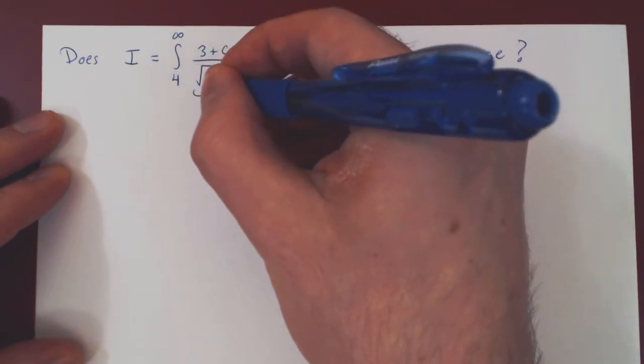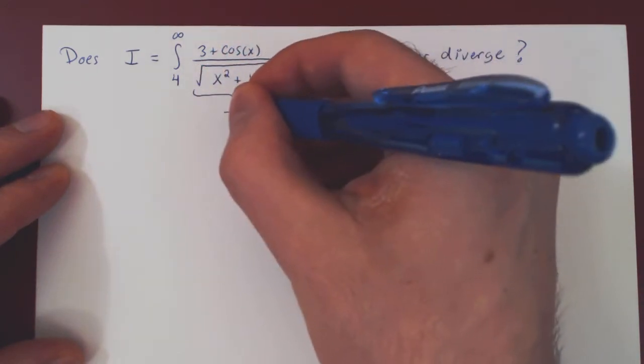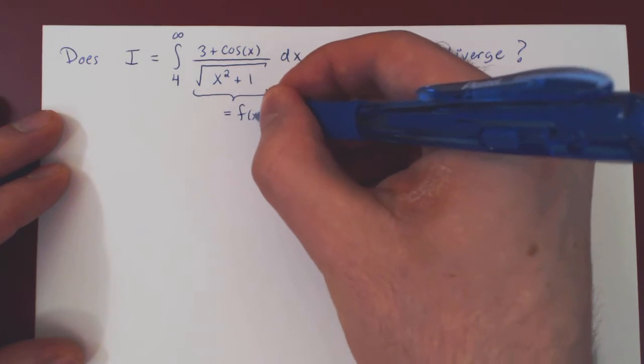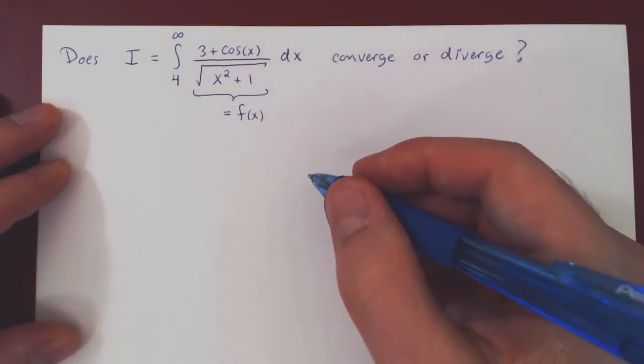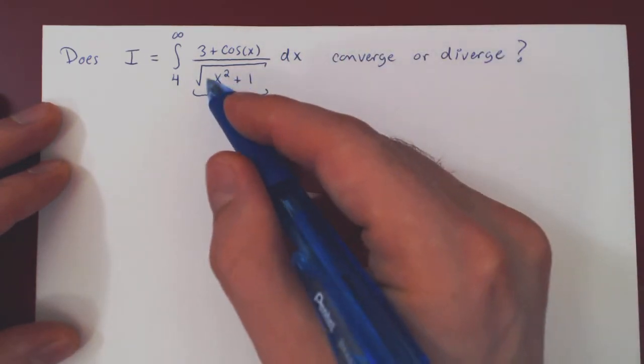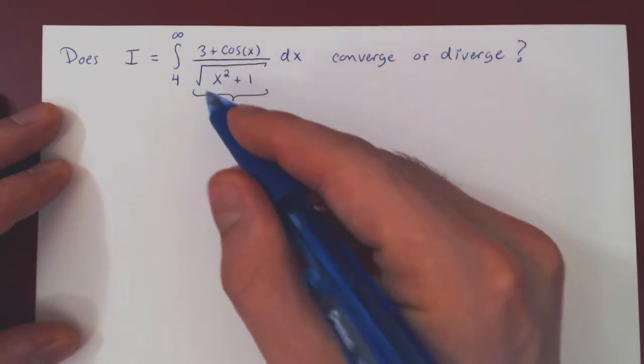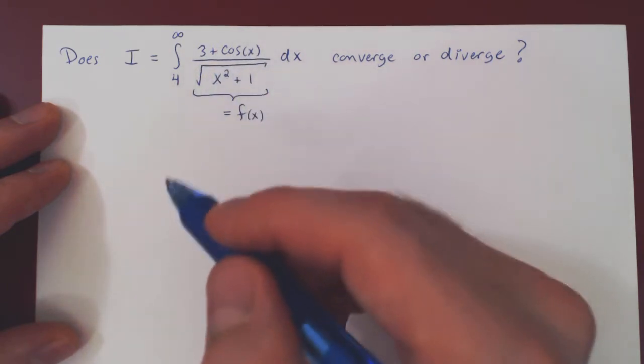So we have here our function f(x). Again, the one condition was that the function was non-negative. Well, clearly the root of x² + 1 is positive, no problem here.